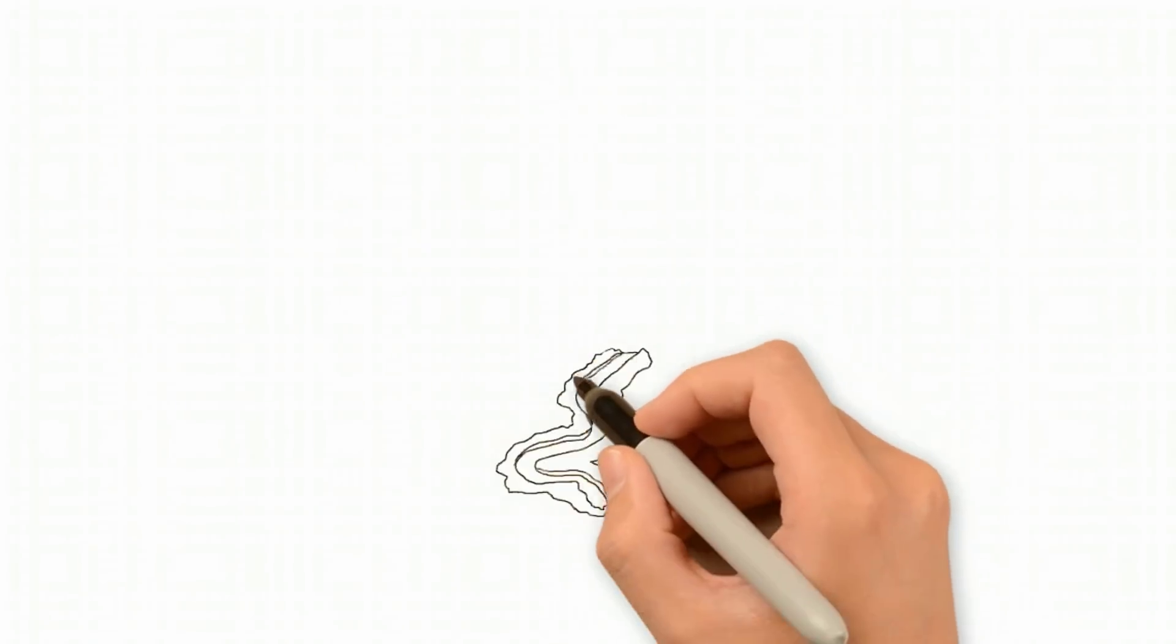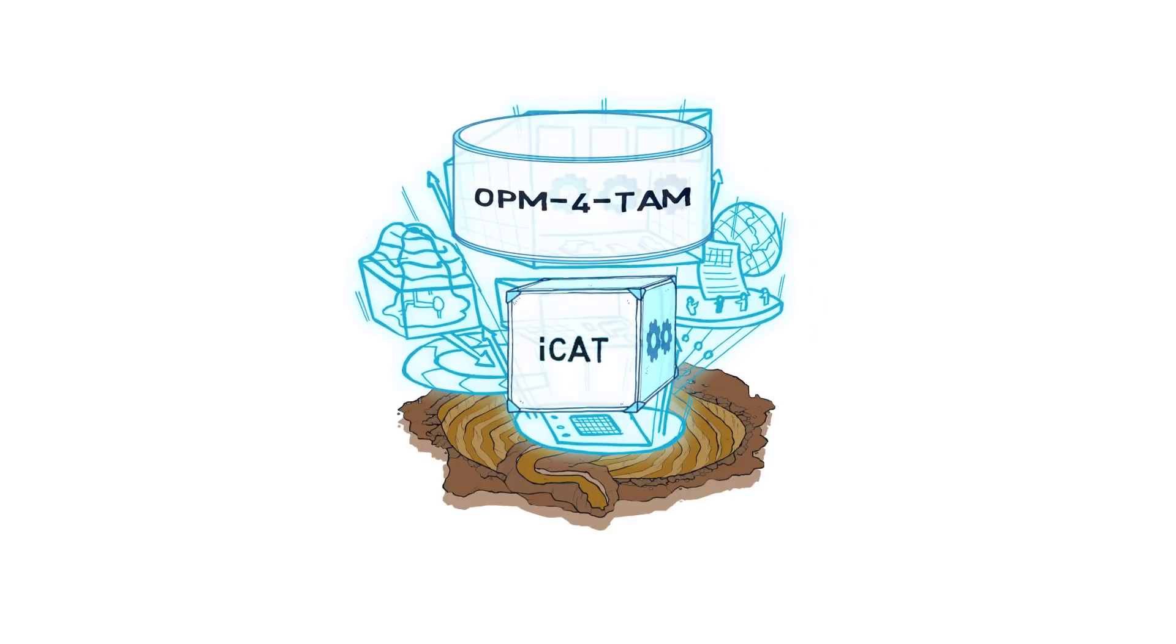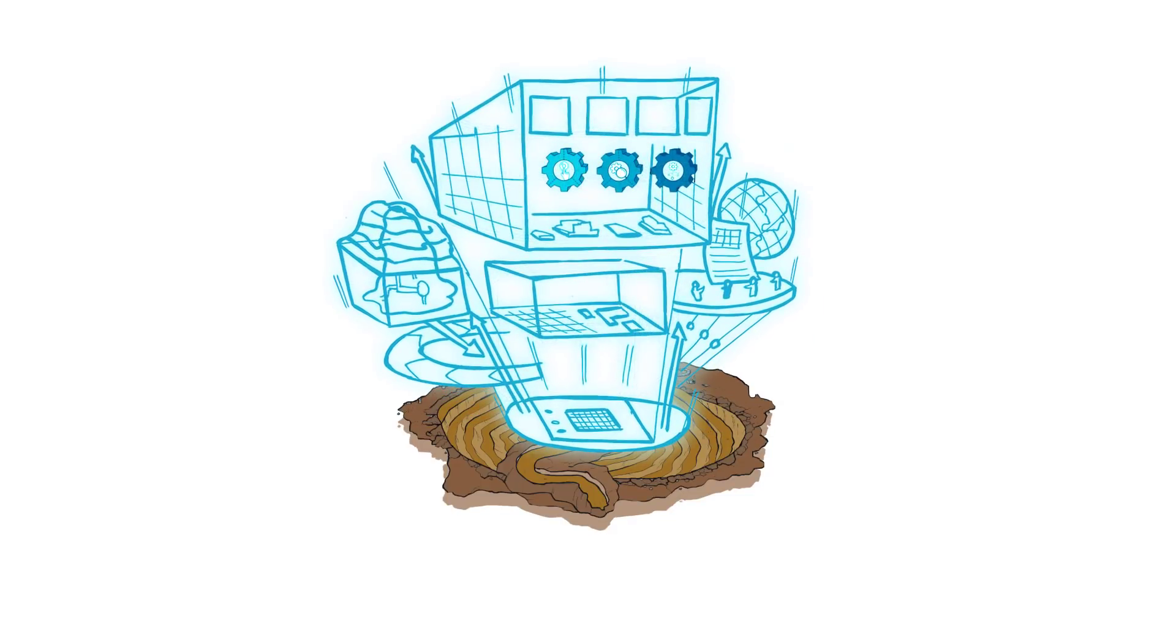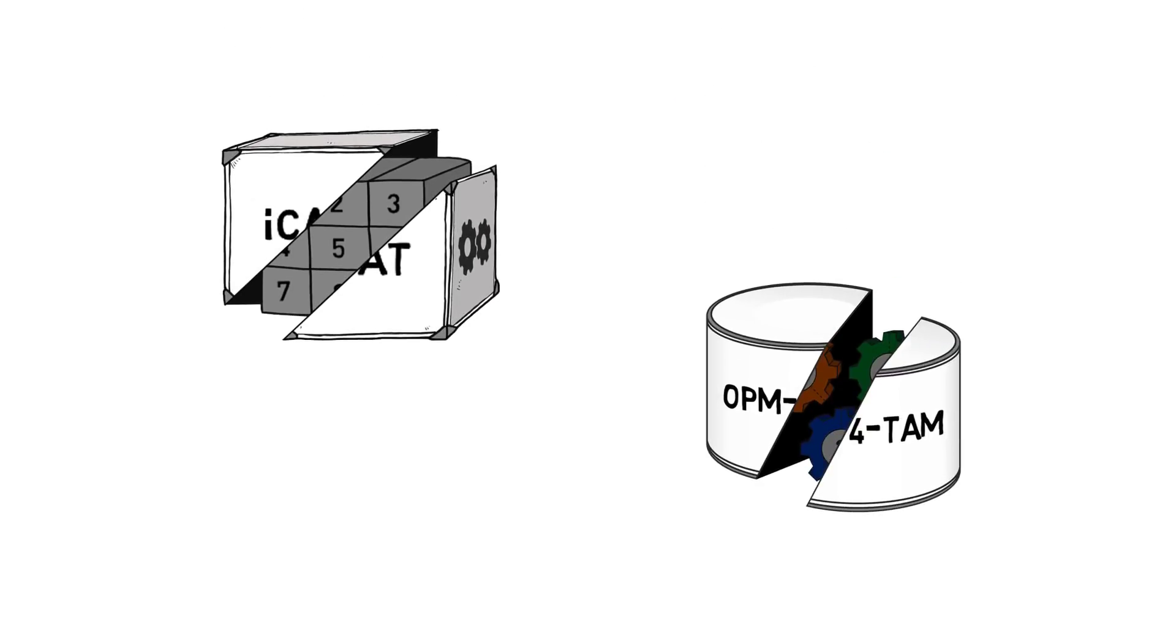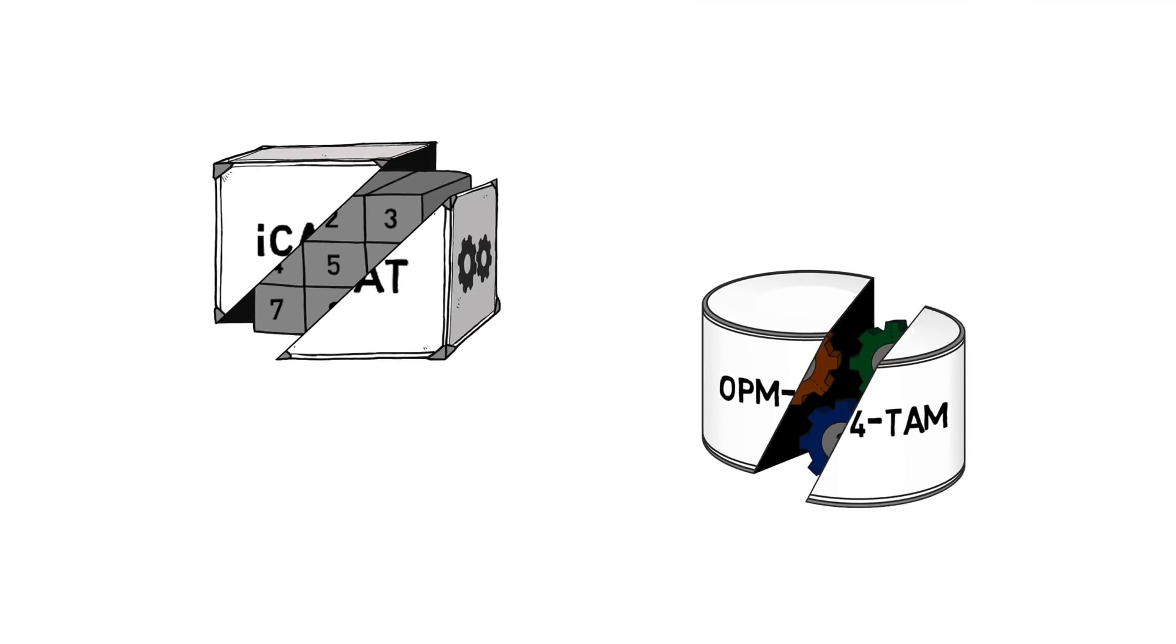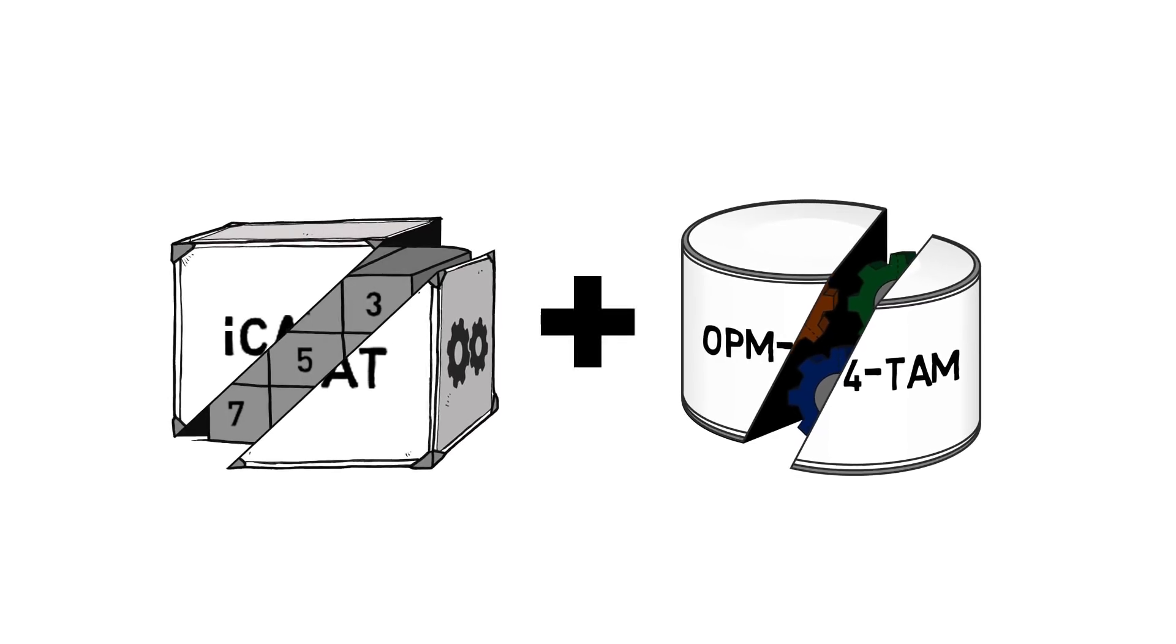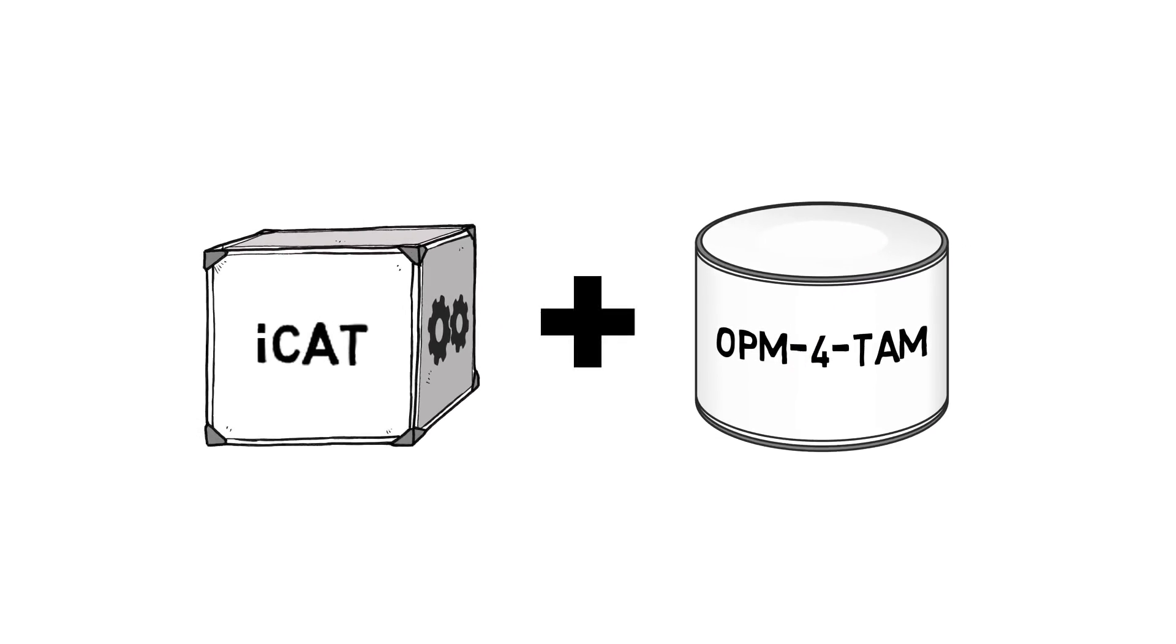The ICAT and OPM for TAM were developed by us to support the mining industry in the process of adopting disruptive innovations. The ICAT tool diagnoses the strengths and areas for development and OPM for TAM identifies the practices that support technology adoption. This video has explained how these two tools can be used together to inform leaders' decisions about what development activities to engage in to best support their planned technology adoption.